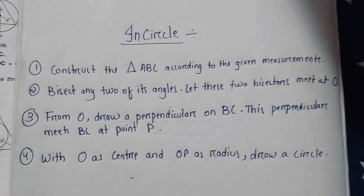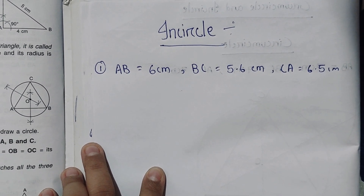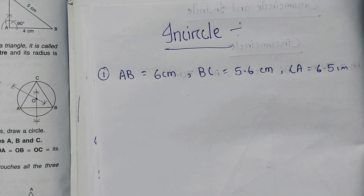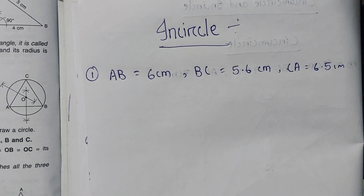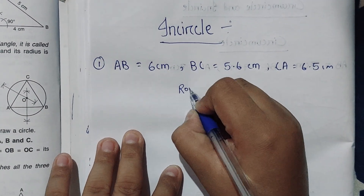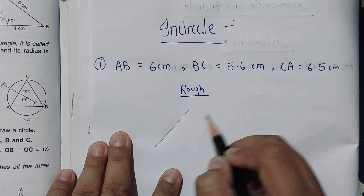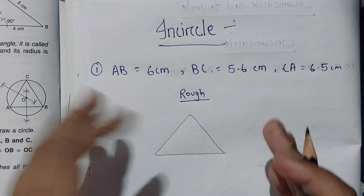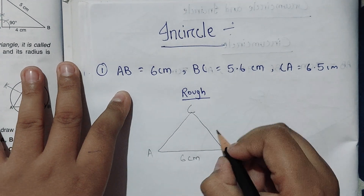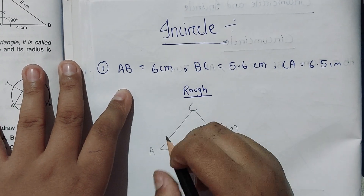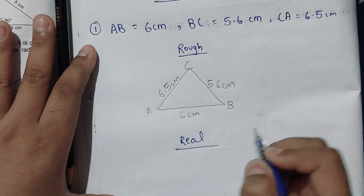For the incircle, let us use different measurements. AB (the base) is 6 cm, BC is 5.6 cm, and CA is 6.5 cm. First, make a rough sketch — if you don't make a rough sketch it will be difficult. The triangle can be of any shape; mark the vertices A, B, and C, then draw the real figure.